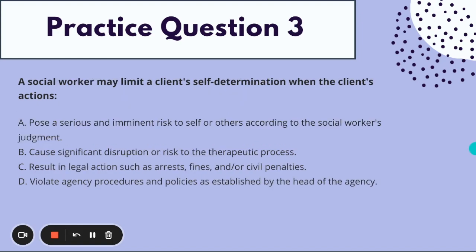Question number three — this is another ethics question. A social worker might limit a client's self-determination when the client's actions: A) pose a serious and imminent risk to self or others according to the social worker's judgment, B) cause significant disruption or risk to the therapeutic process, C) result in legal actions such as arrests, fines, or civil penalties, D) violate agency procedures and policies as established by the head of the agency. When can we limit the right to self-determination?